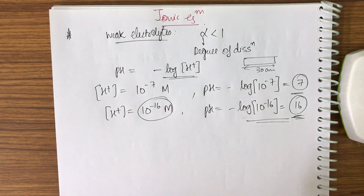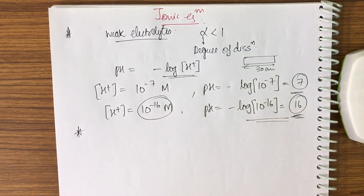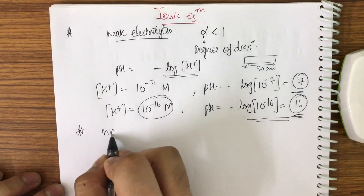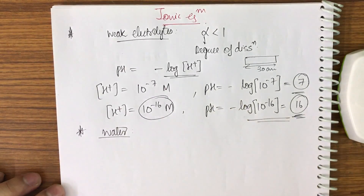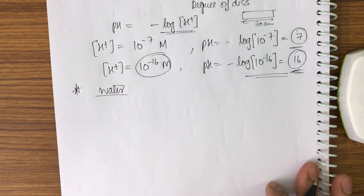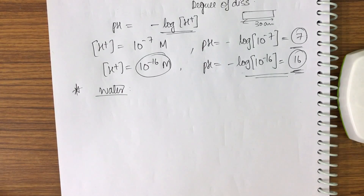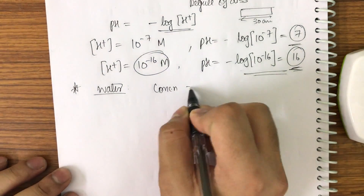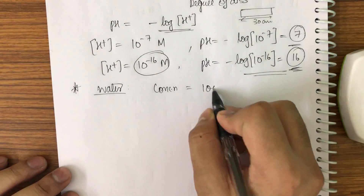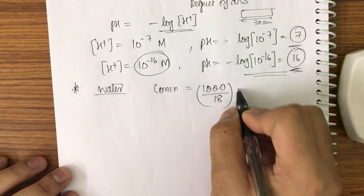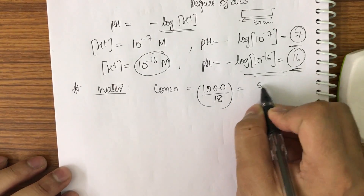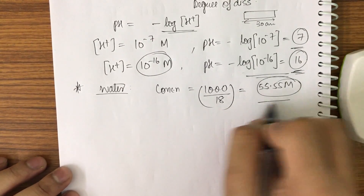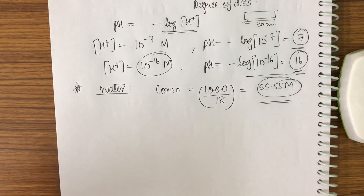Now let me find the concentration of water. The concentration of water will be 1000 upon 18, and on calculation we get 55.55 molars.